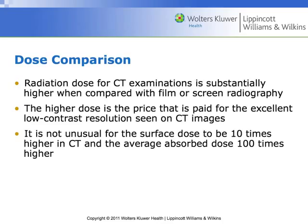That's the balancing act that any good CT technologist is constantly figuring out — is this the appropriate patient for this exam, how will this dose affect them, and how can I get the best pictures with an optimal dose? It's not unusual for the surface dose to be 10 times higher in CT and the average absorbed dose 100 times higher than x-ray. The skin dose is only 10 times higher because in CT we're spinning the beam around, spreading dose across the entire skin surface, whereas in x-ray one side of the skin gets all the exposure.